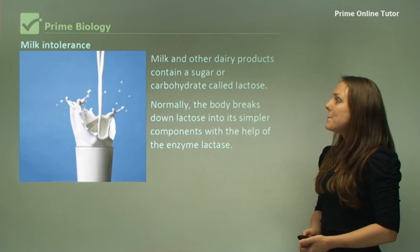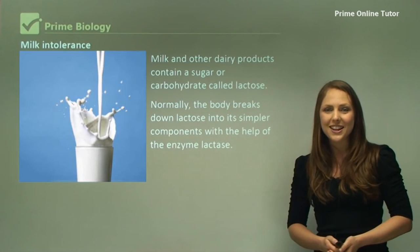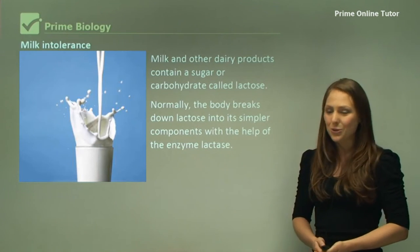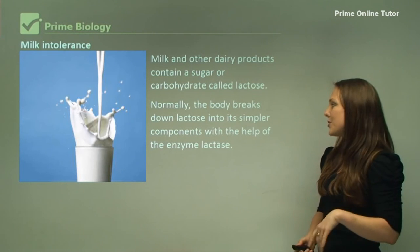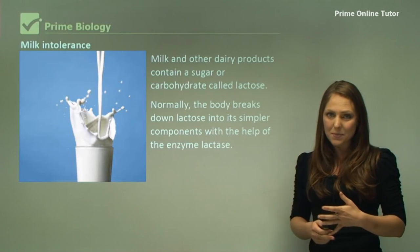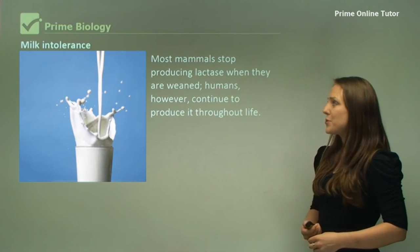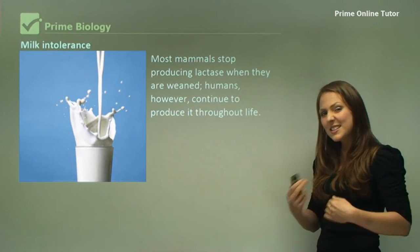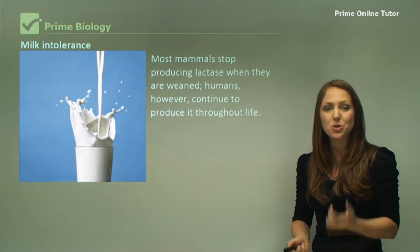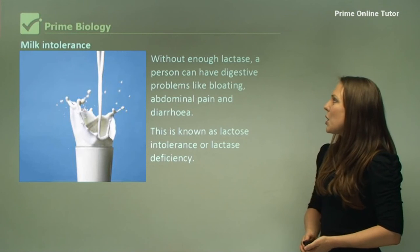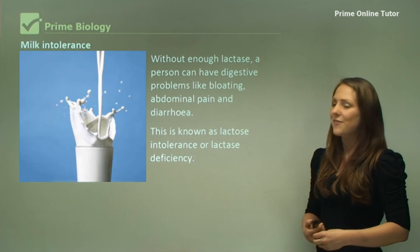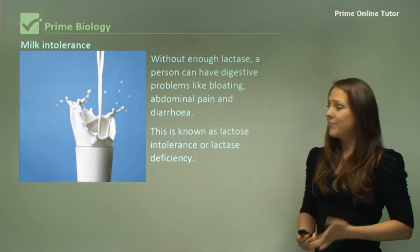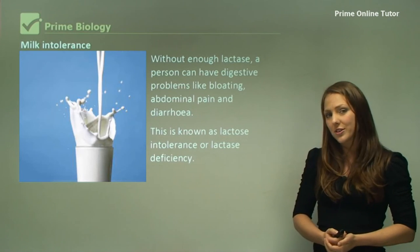Now, intolerances. Milk intolerance is quite common in the human population. Milk and other dairy products contain a sugar or carbohydrate called lactose. Normally the body breaks down lactose into its simpler components with the help of an enzyme called lactase. Most mammals actually stop producing lactase when they're weaned from their mother. However, humans continue to produce lactase, which means we can continue to drink milk and have dairy products. Without enough lactase, a person can have digestive problems including bloating, abdominal pain, and diarrhea — this is known as lactose intolerance or lactase deficiency.